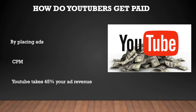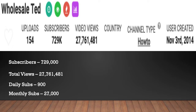Many factors affect CPM, and these include demographics, content, gender, and time of watch. YouTube will also take 45% of your revenue from advertising. In 2018, advertisers spent an average of three dollars per thousand views.